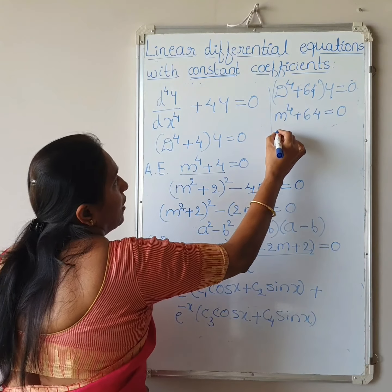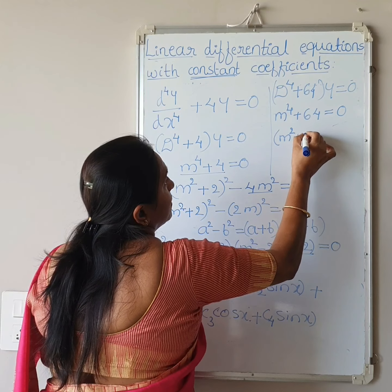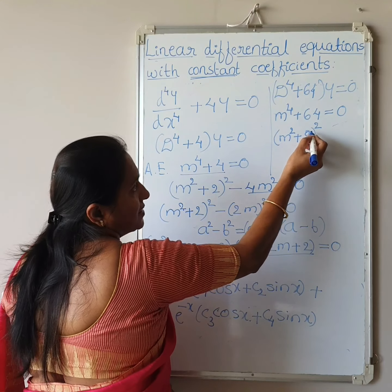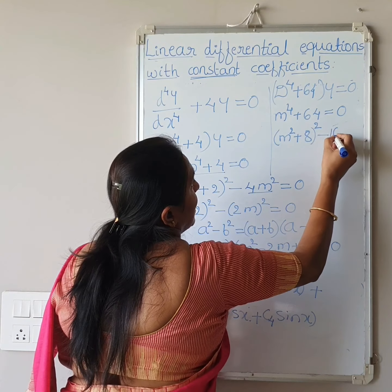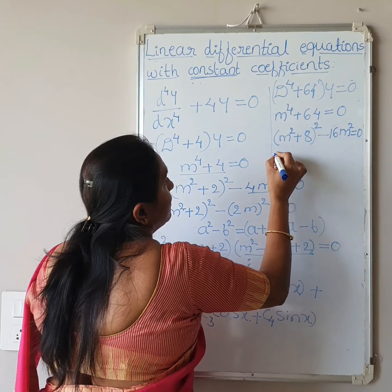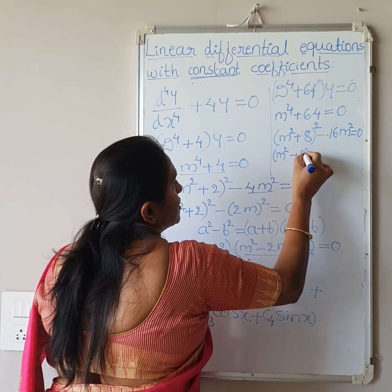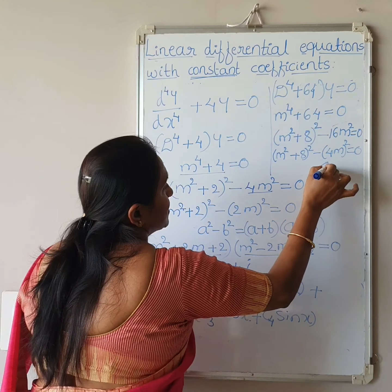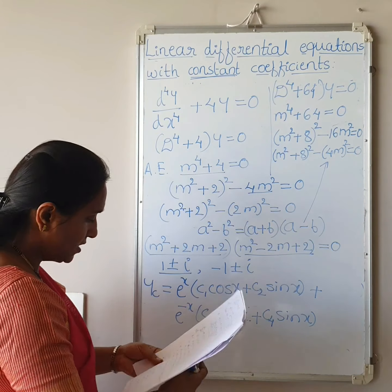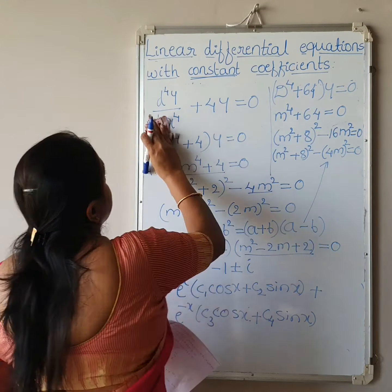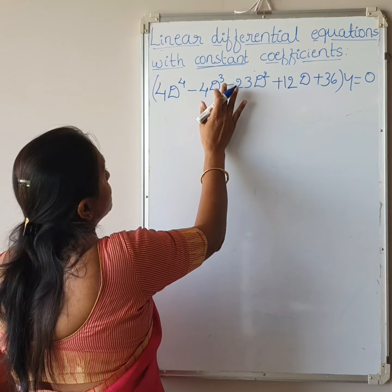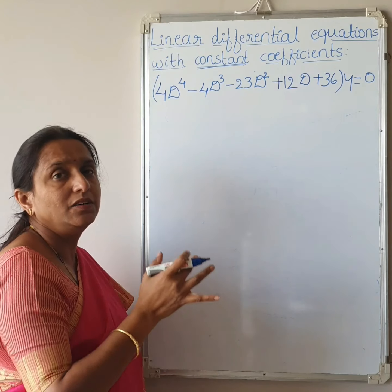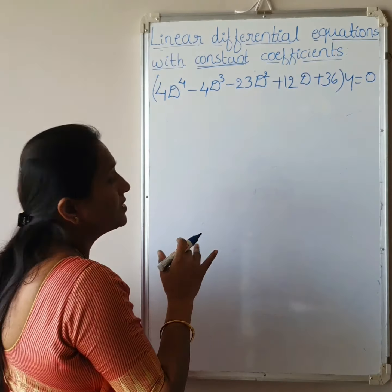A similar example is d⁴y/dx⁴ plus 64y equals 0. The auxiliary equation is m⁴ plus 64 equals 0. We adjust: (m² plus 8)² minus (4m)² equals 0, then factor similarly. I hope you can solve this using the same approach as the previous example.